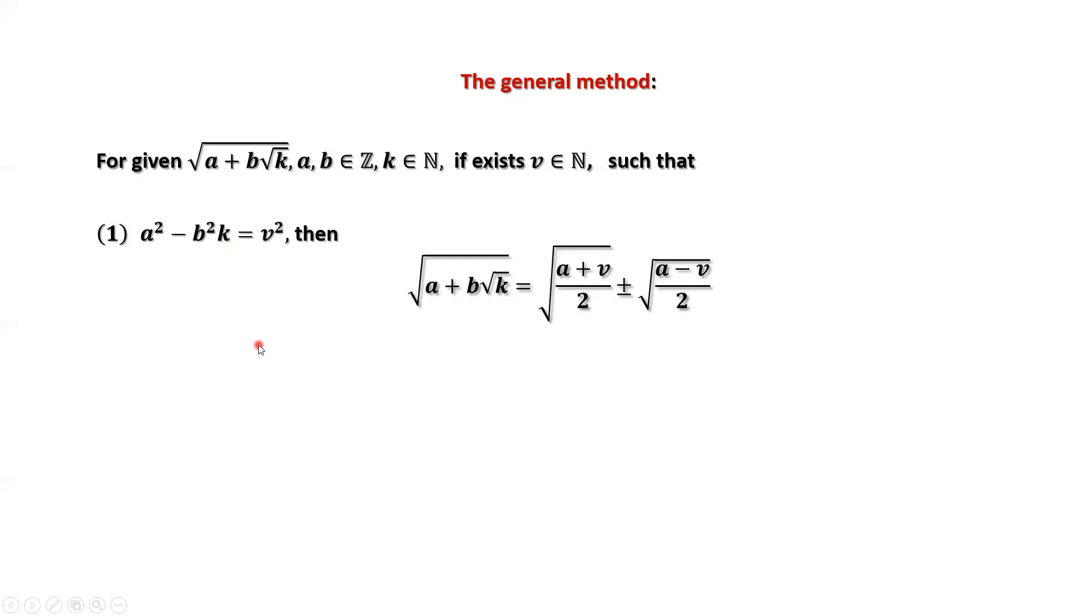If the second condition is satisfied: negative a squared plus b squared times k equals v squared times k. Then we have square root of a plus b times square root of k equals square root of (b plus v) over 2, plus or minus square root of (b minus v) over 2.